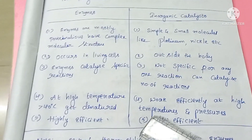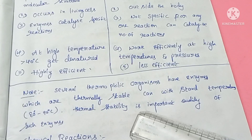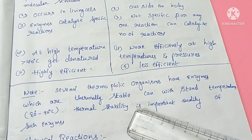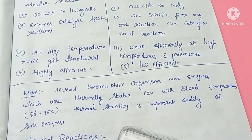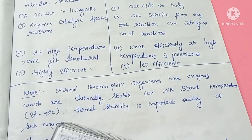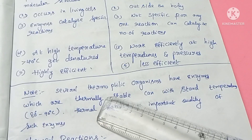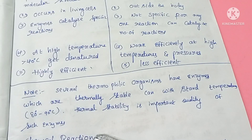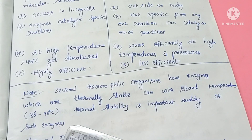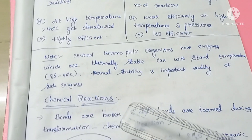However, there is a note: thermophilic organisms are high-temperature-loving organisms. In these thermophilic organisms, there are special types of enzymes that can tolerate temperatures of nearly 80 to 90 degrees centigrade. This property is called thermal stability, which is an important quality of such enzymes, allowing them to survive under high-temperature conditions.